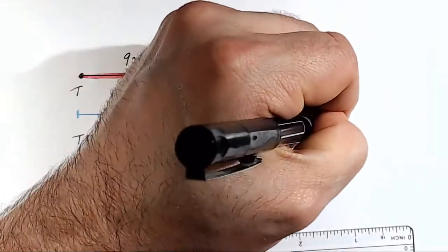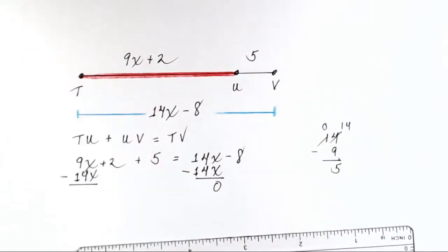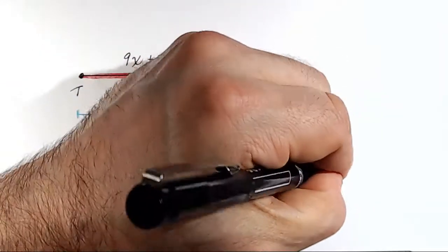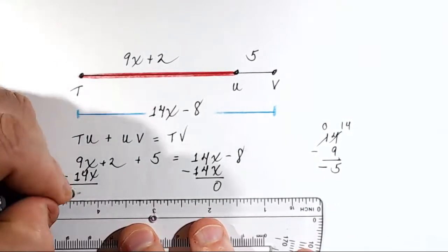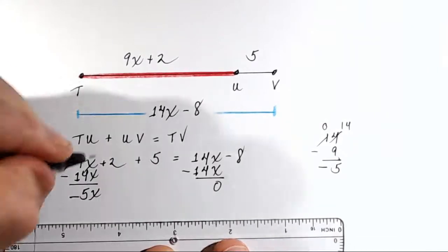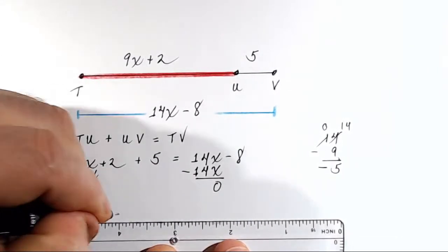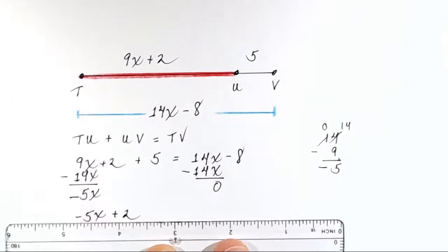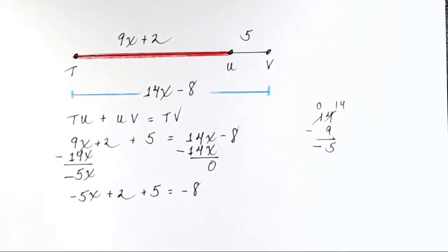So we have to borrow. This becomes 14, and 14 minus 9 is just 5. 0 minus nothing is 0. So it's negative 5. 9x minus 14x is negative 5x. Let's rewrite. I now have negative 5x plus 2 plus 5 equals negative 8, the only thing left on the right.